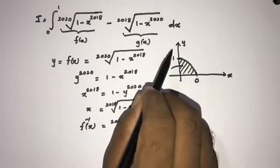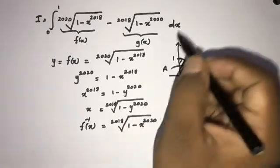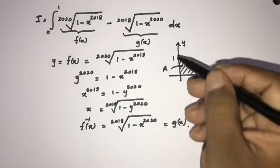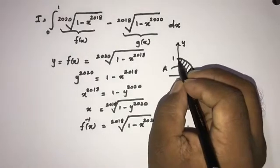And now if we look at the graph of g(x), if we plug in 1 we get 0, and if we plug in 0 we get 1. This function has the same area from 0 to 1.